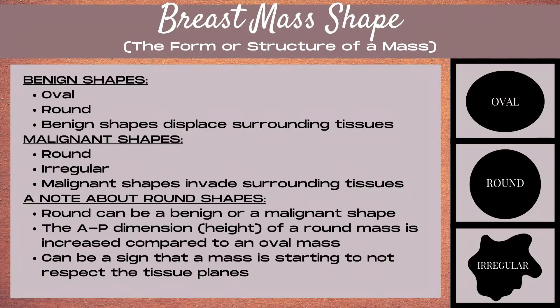Let's discuss breast mass shape. Shape is the form or structure of a mass. There are three shapes in breast ultrasound imaging: oval, round, and irregular. Benign shapes are oval or round, and they displace surrounding tissues. Malignant shapes are round or irregular, and they invade surrounding tissues.